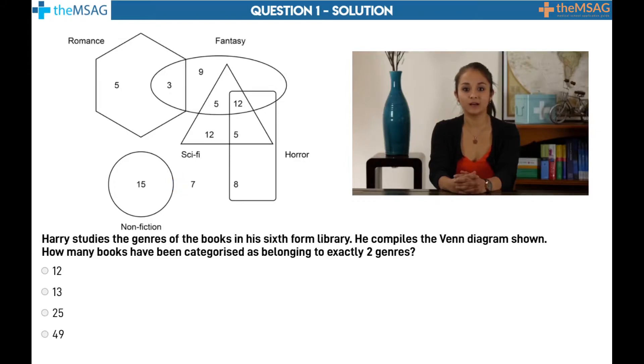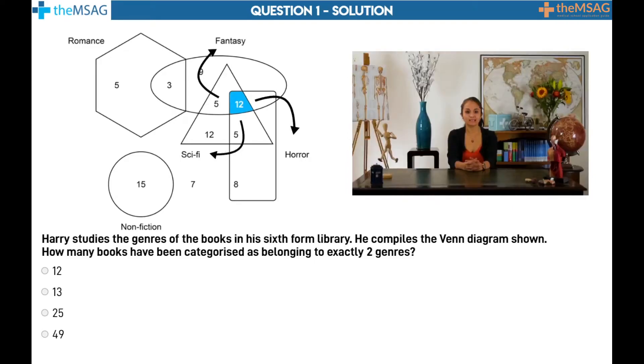You might have gotten 25 as your answer to this question. This would be because you didn't spot that one of the 12s that we can see is in fact inside three overlapping shapes. Those that correspond to fantasy, horror and sci-fi. As the question was asking for a number of books that fall into exactly two categories, these 12 books do not count. Instead we have three that belong to both romance and fantasy plus five belong to fantasy and sci-fi plus another five belonging to fantasy and horror. Attention to detail is the key when tackling Venn diagrams.